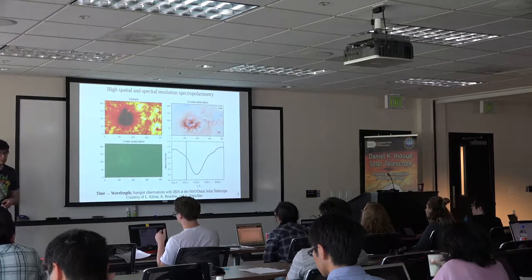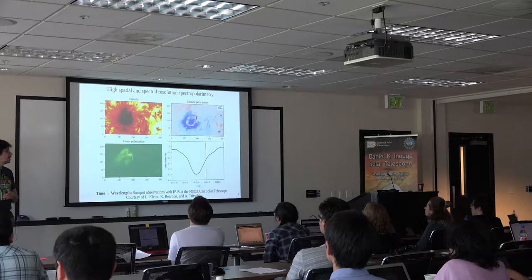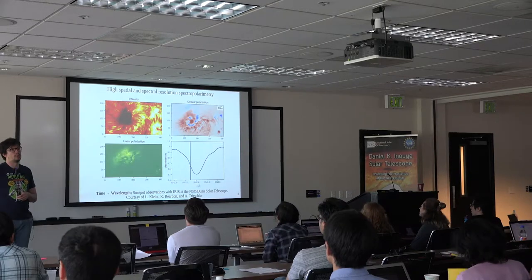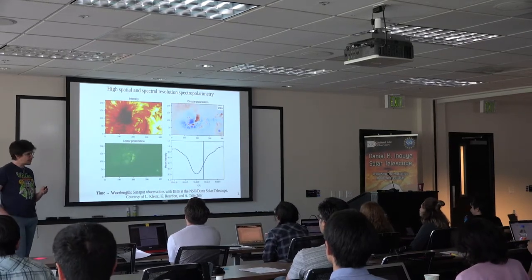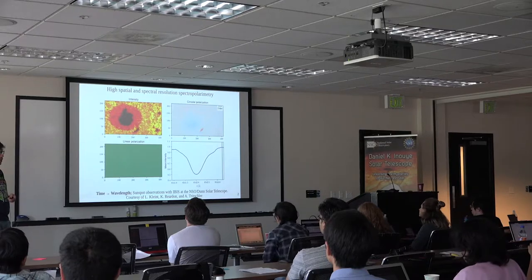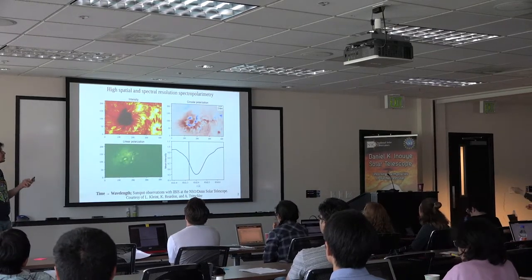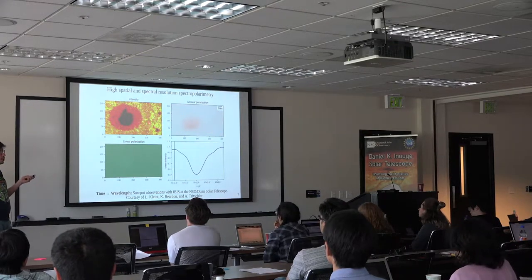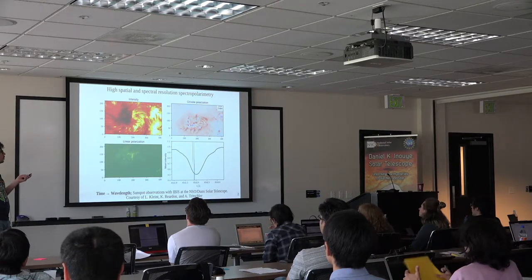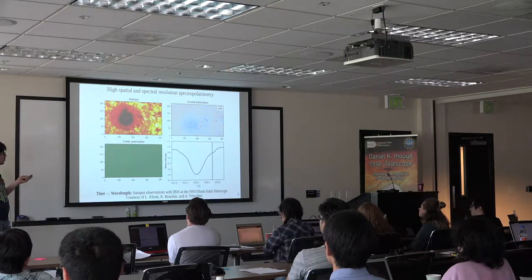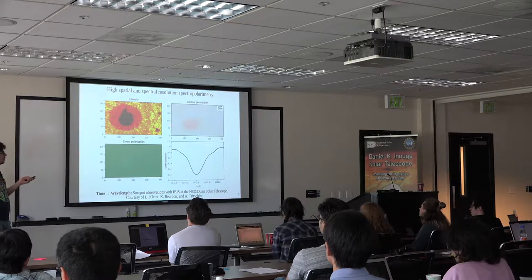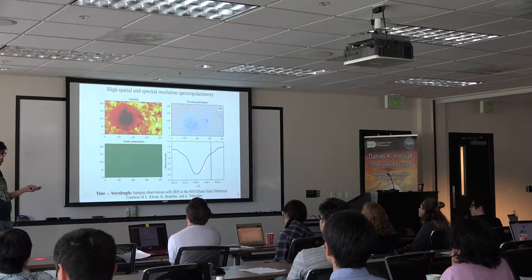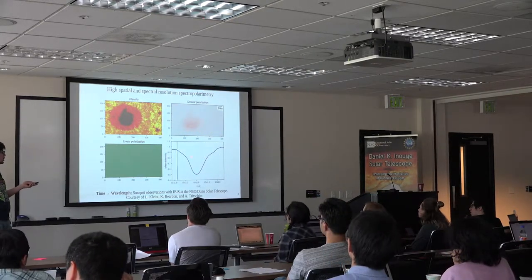This is one of my favorite videos — the highest spatial and spectral resolution spectropolarimetry. Let's spend some time explaining each of the four images. This is not showing evolution in time; it's showing how this relatively small piece of the Sun looks different at each wavelength. We are basically scanning through the calcium 8542 line.